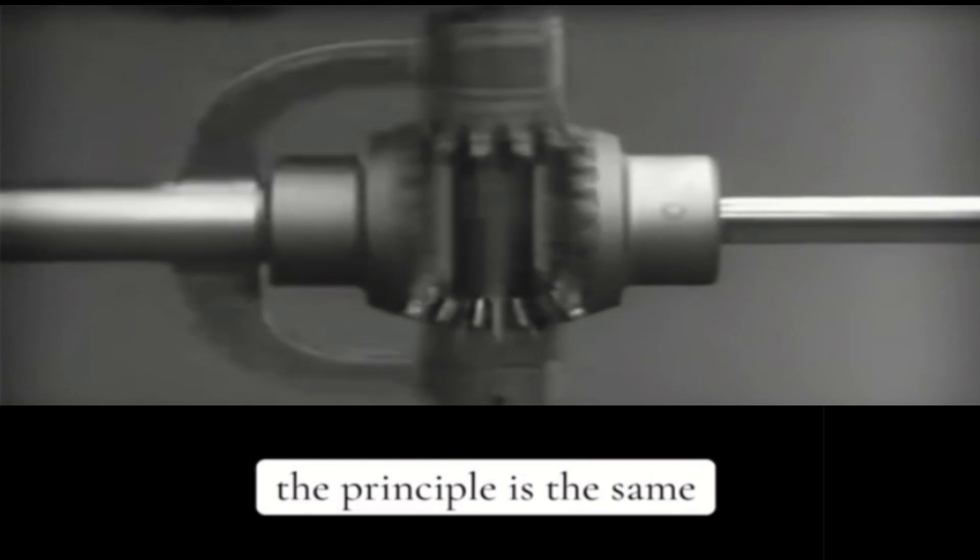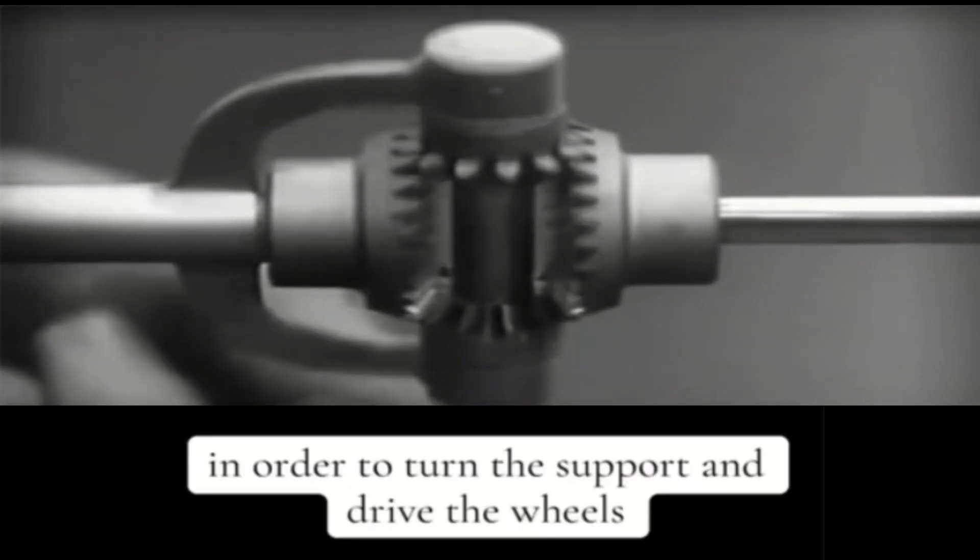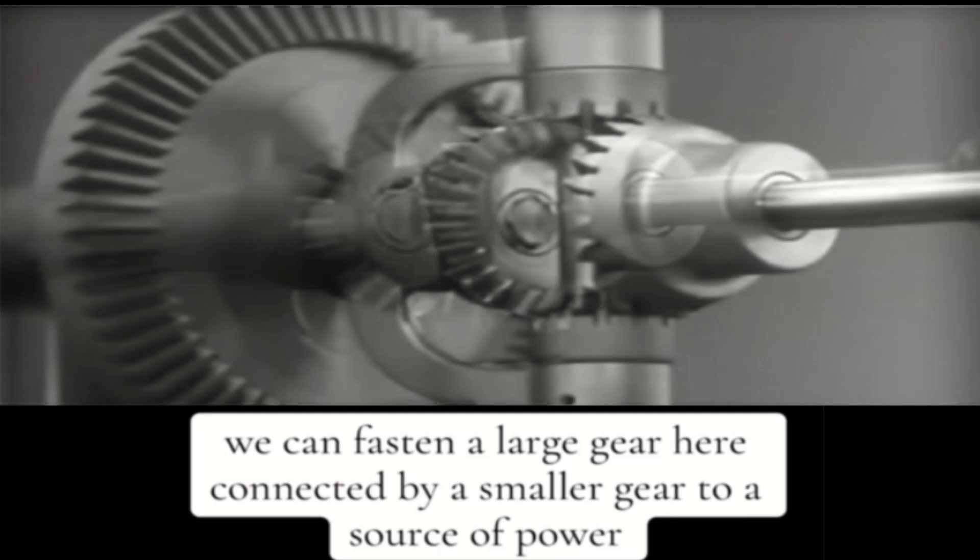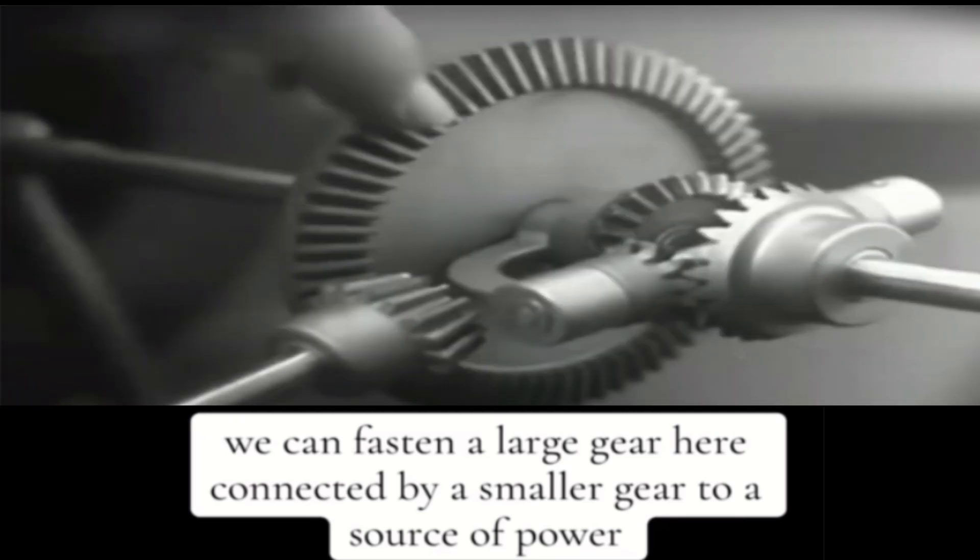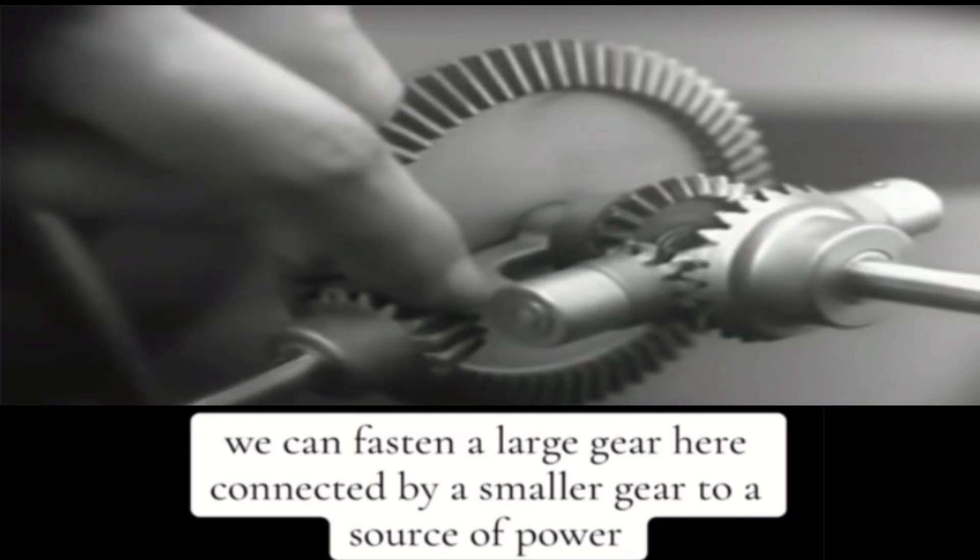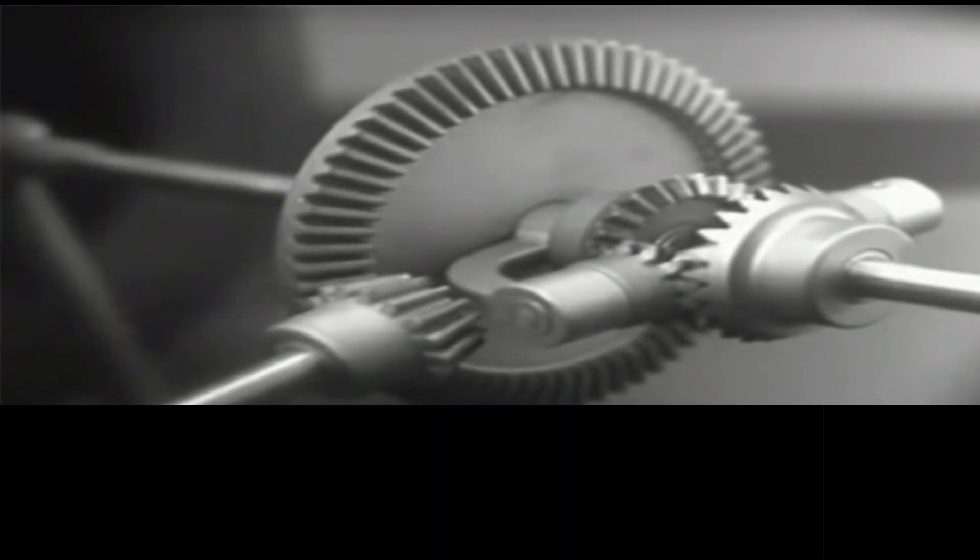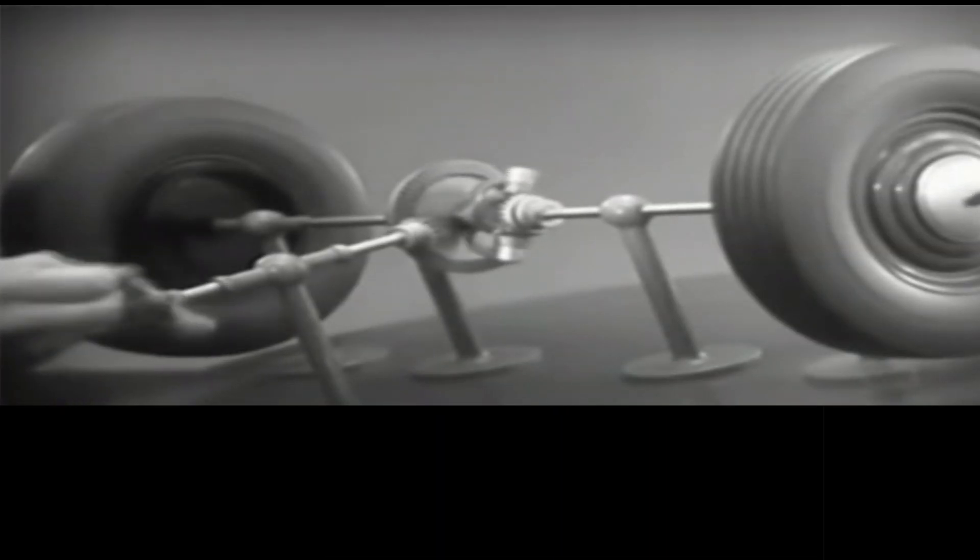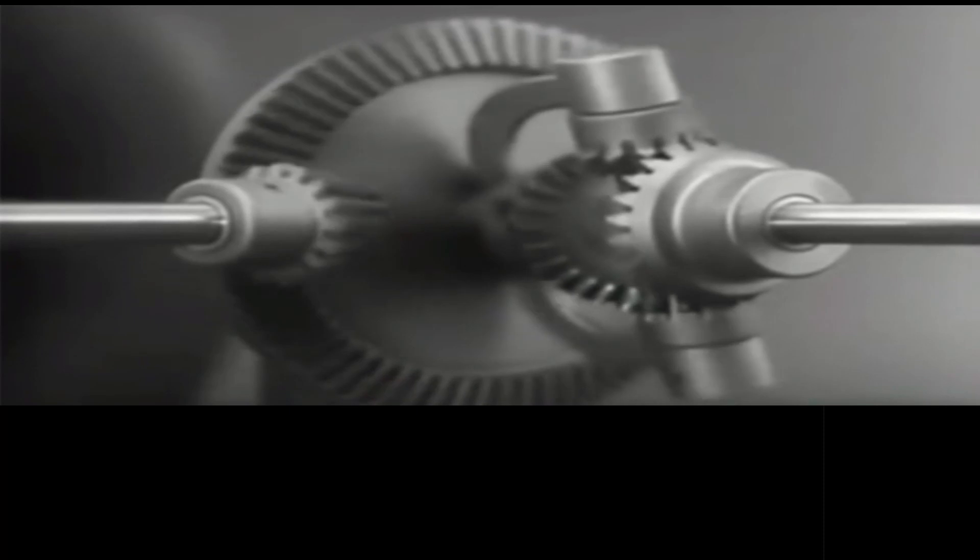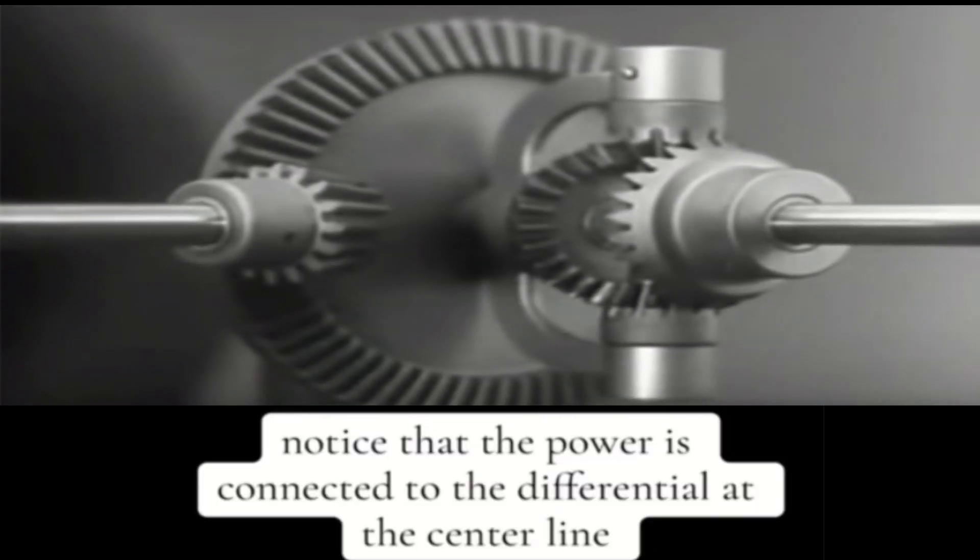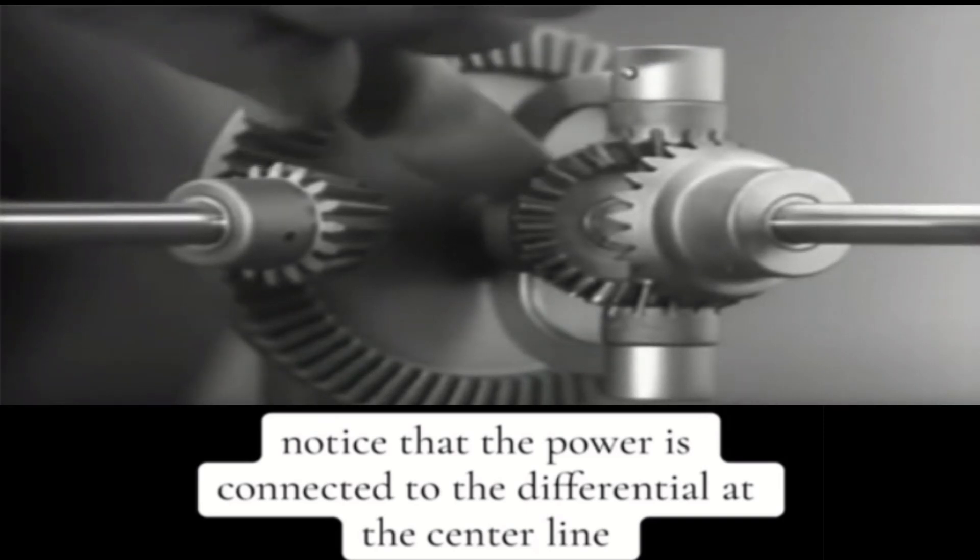The principle is the same. In order to turn the support and drive the wheels, we can fasten a large gear here, connected by a smaller gear to a source of power. Notice that the power is connected to the differential at the center line.